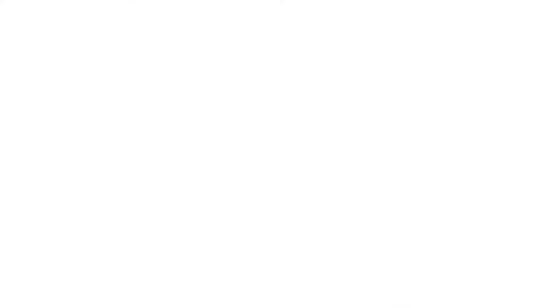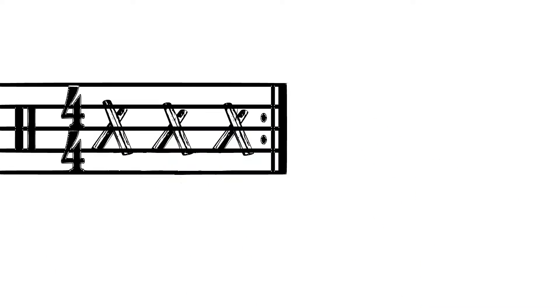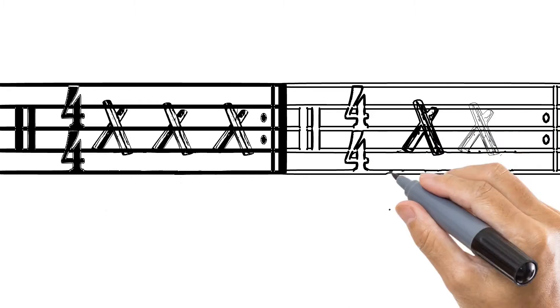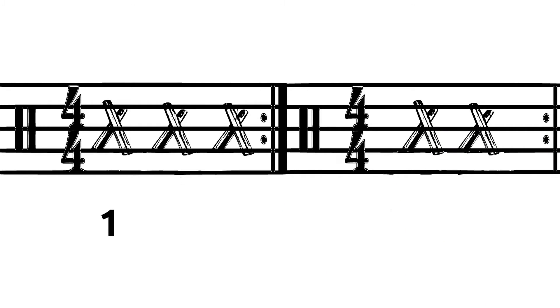And some have said that if the clave direction is 3-2, then the bass tumbao will constantly play this type of pattern over and over again, thereby emphasizing beat 1 and beat 5 of each musical phrase like this.